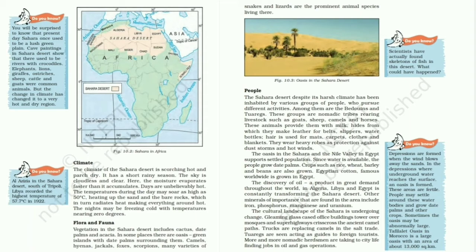The Sahara Desert is rich in minerals. It has huge resources of coal, oil, and natural gas, besides iron, phosphorus, uranium, copper, and manganese. Hence, mining is also an important occupation of people here. The camel is called the ship of the desert as it is the most important mode of transport and is still used to carry goods and people. Although in some places, trucks are used in place of camels, particularly in the salt trade.